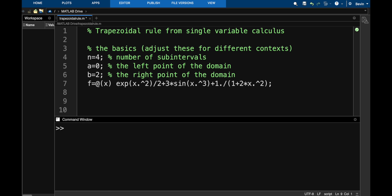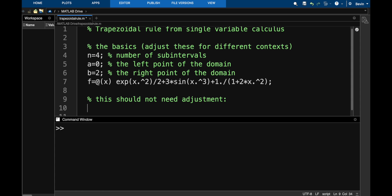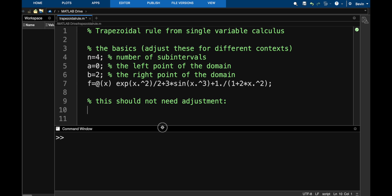The rest of the code is going to consist of lines that shouldn't need to be changed. So to run this for different functions and different domains, I should only need to adjust lines four through seven. Let me make my script window a little taller.